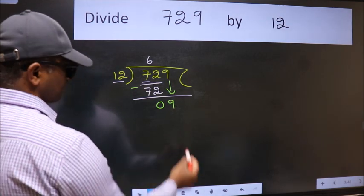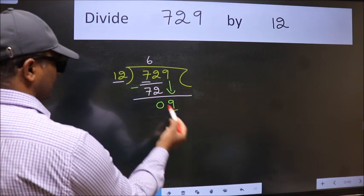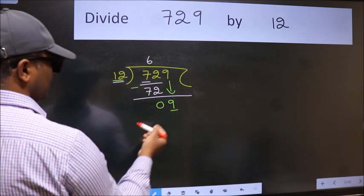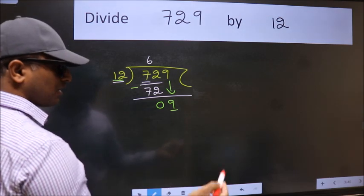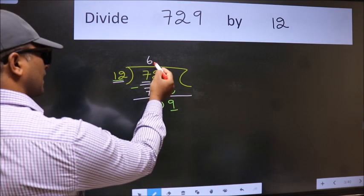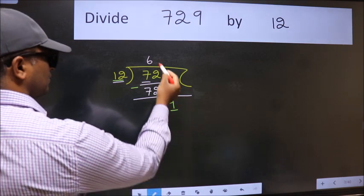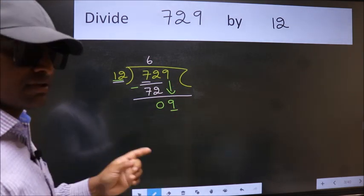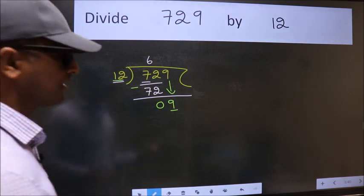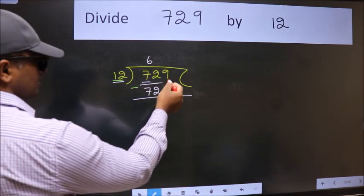And the mistake is this. Here we have 9 and here 12. 9 is smaller than 12. So what many do is they directly put dot, take 0, which is wrong. Why is it wrong? Because just now you brought this number down.